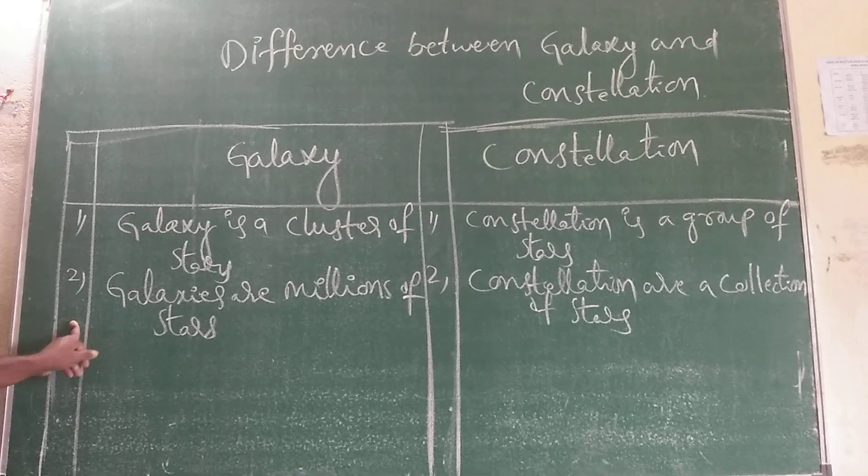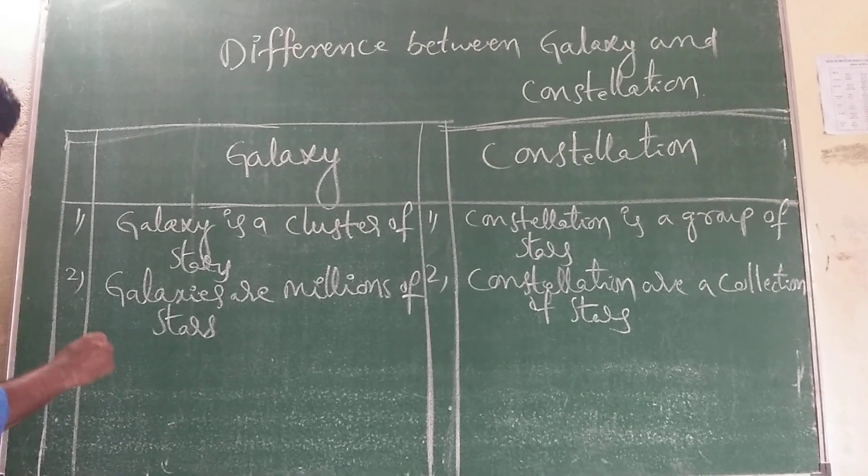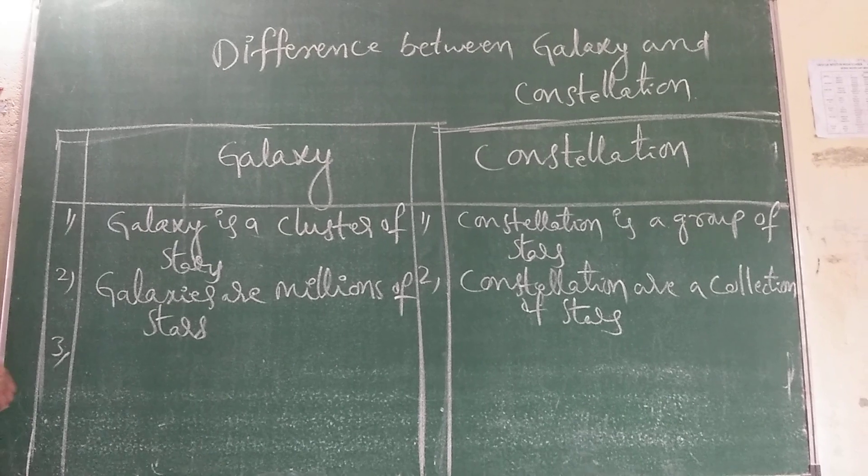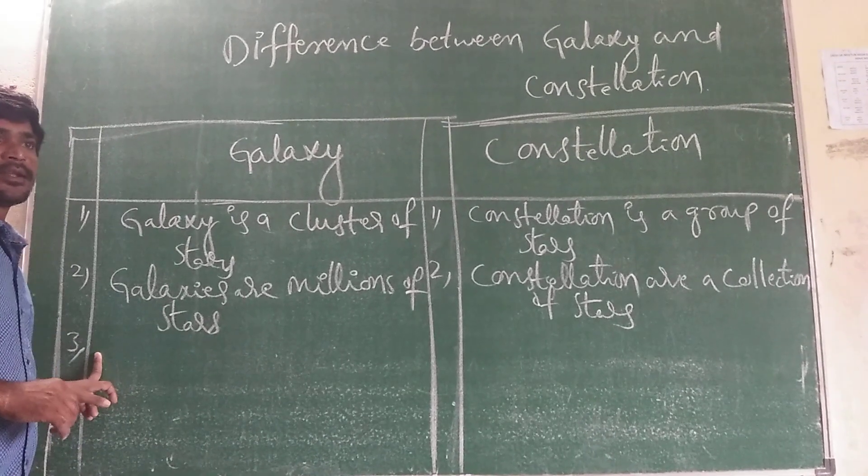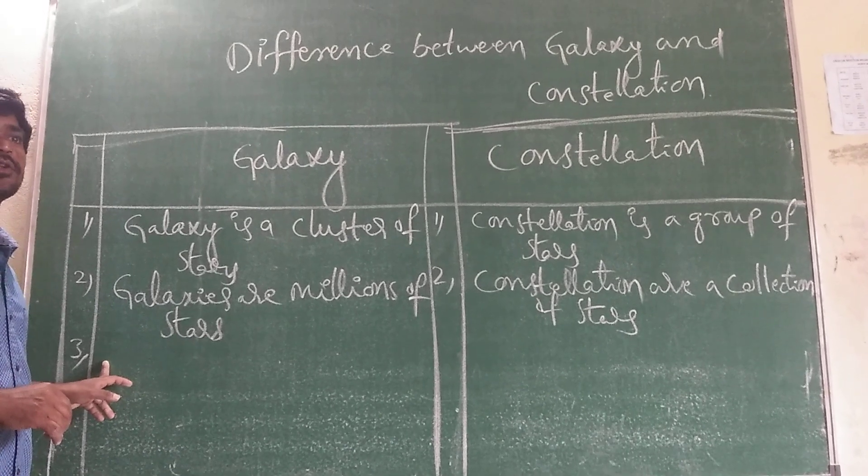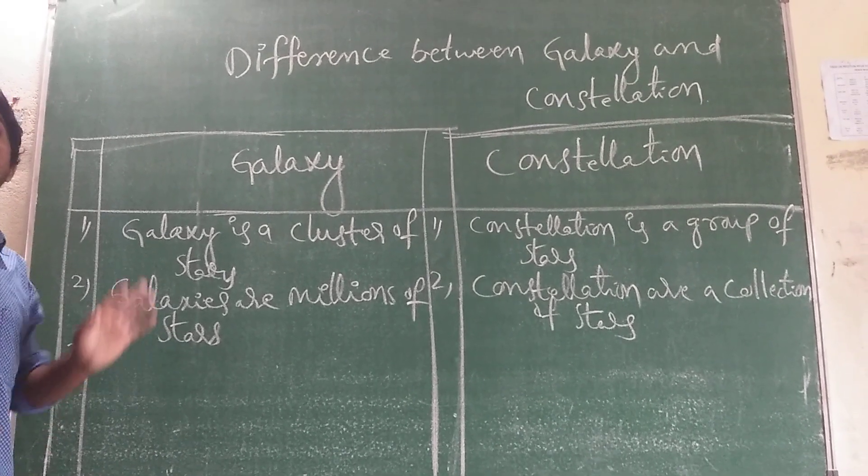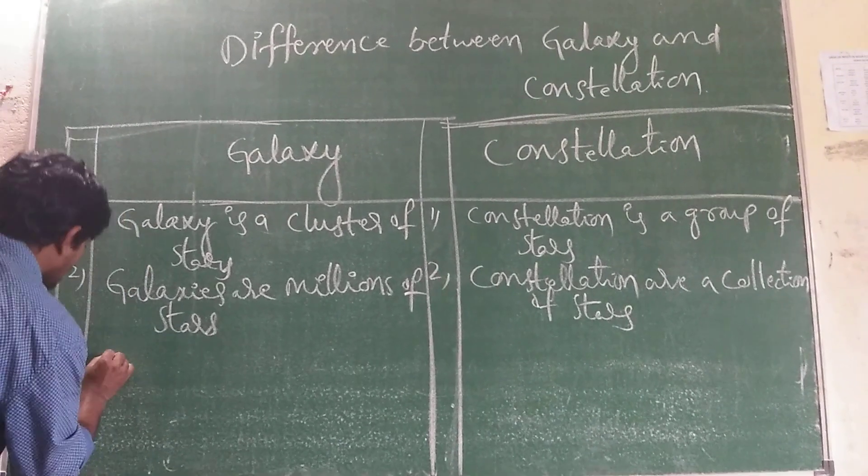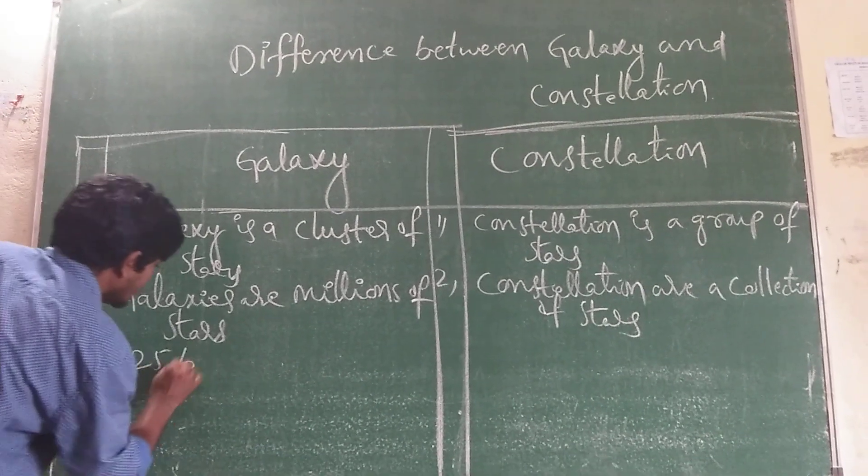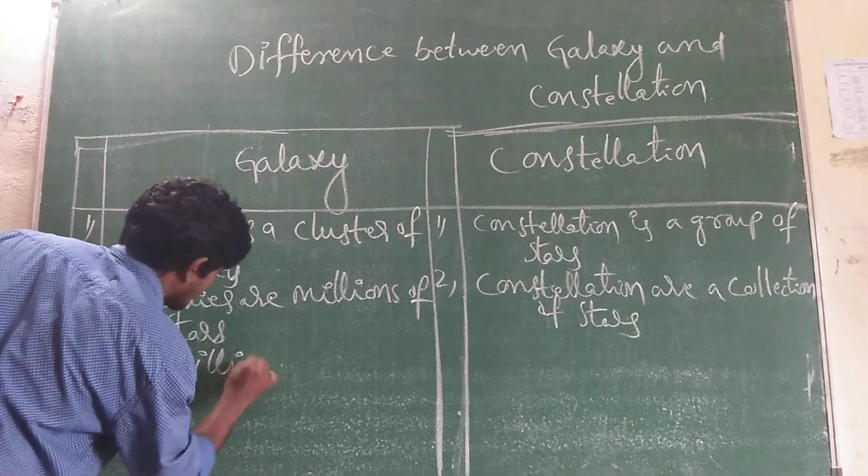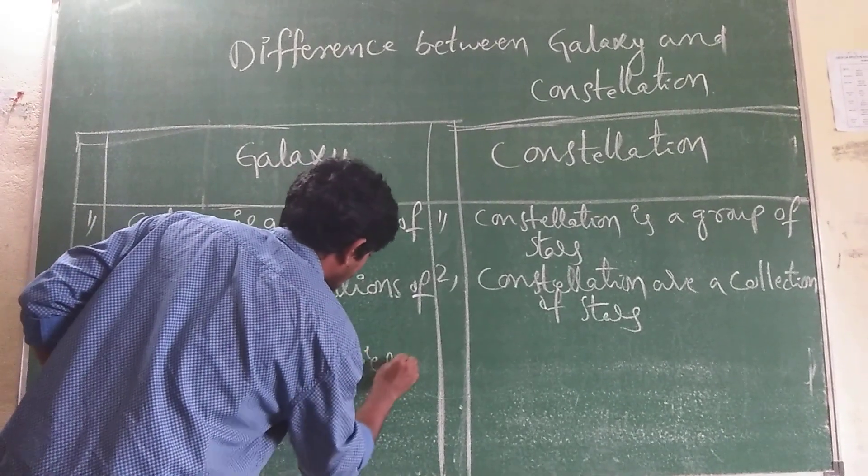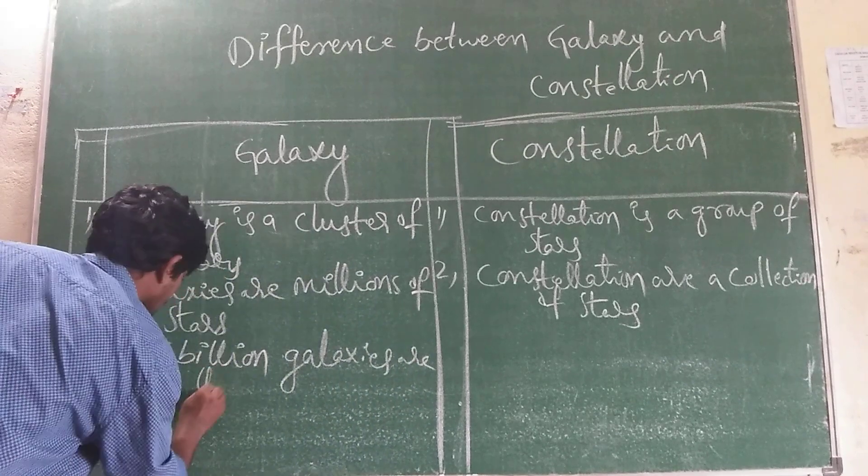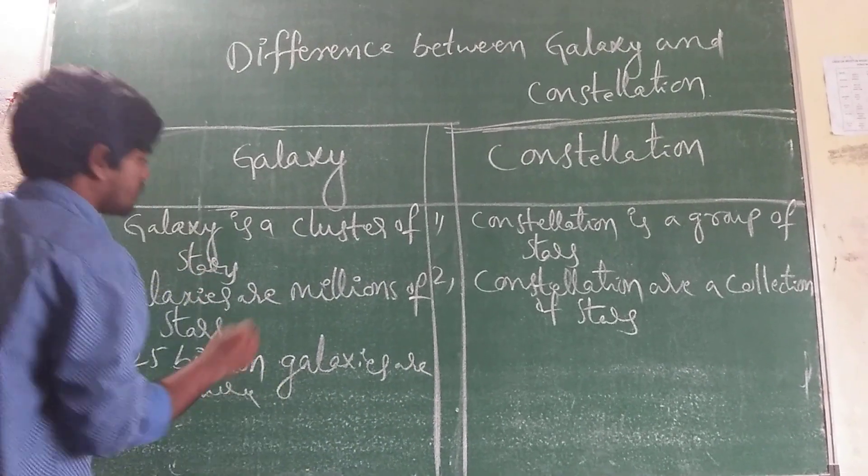Did you catch my point? Is it clear? Third point. There are how many galaxies are there in the universe? There are 125 billion galaxies that are there.